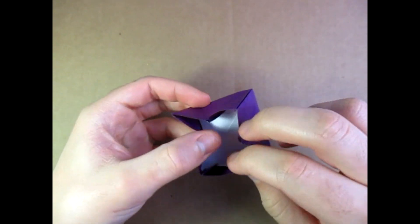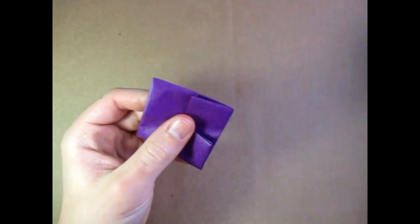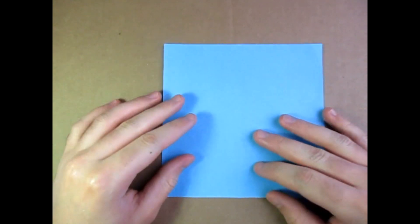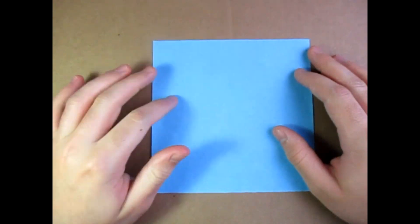Alright, so for this box right here I'm going to use a six inch square origami paper, but you can probably use any size square or any type of paper. I'm going to make a colored box with white inside.